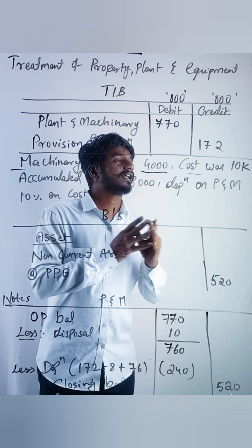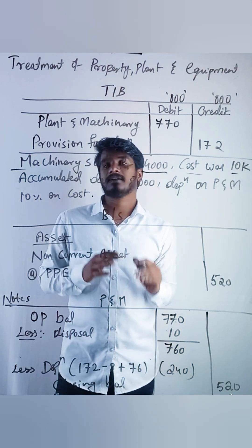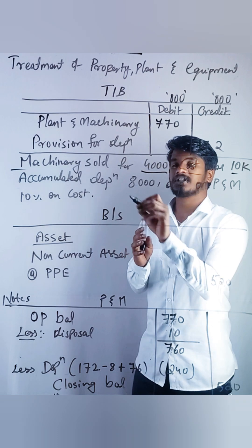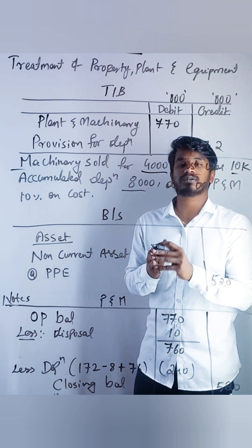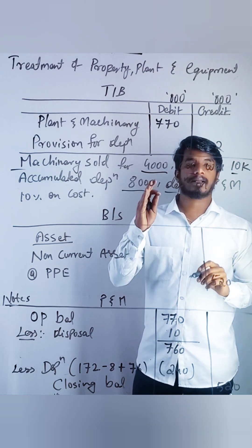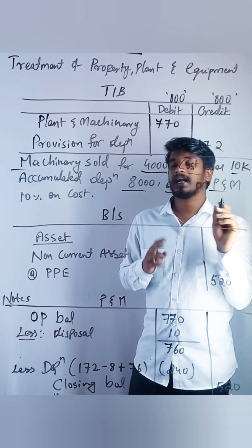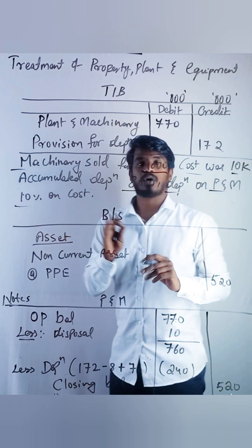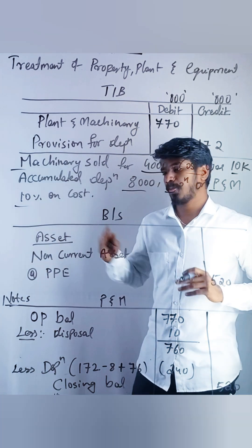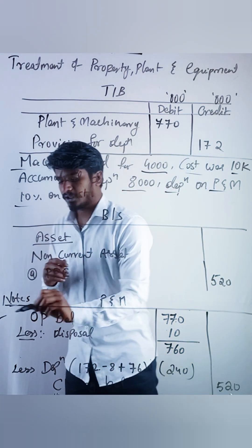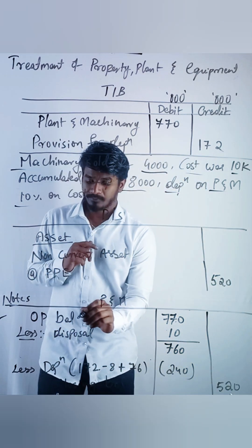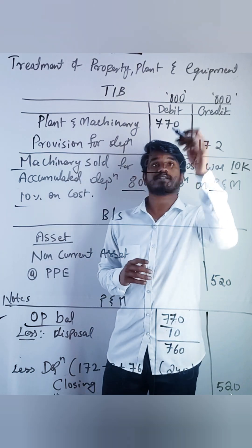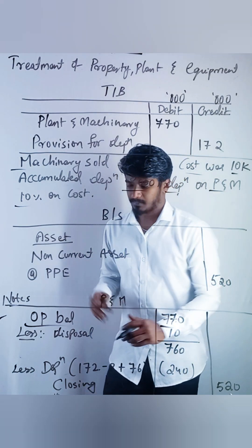The cost of that machinery was 10,000 and accumulated depreciation is 8,000. The depreciation on plant and machinery is 10 percent on cost. Now in the notes to accounts, write opening balance 770, which is taken from the trial balance.